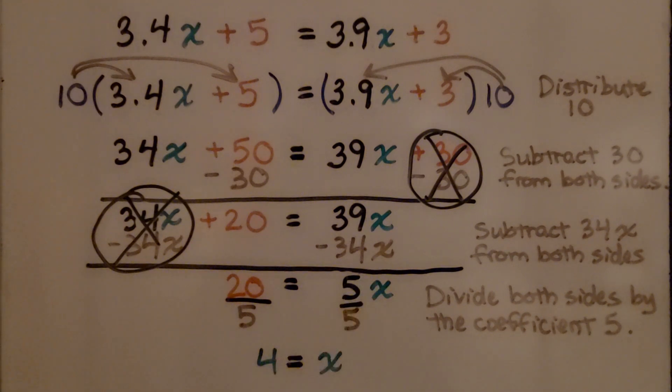20 equals 5x. We divide both sides by this coefficient 5 because our goal is to get this x isolated to one side of the equal sign. Now 5 over 5 is 1, we have 1x. 20 divided by 5 is 4. So let's go through a word problem and do this again.